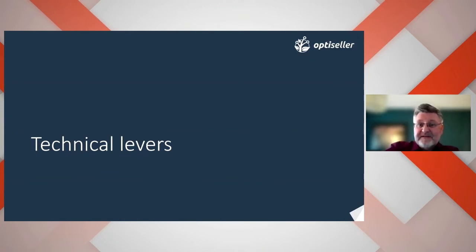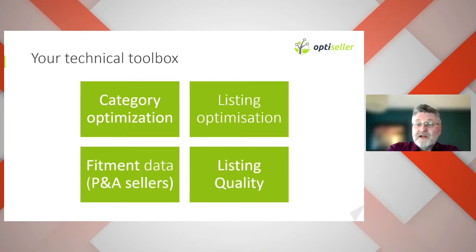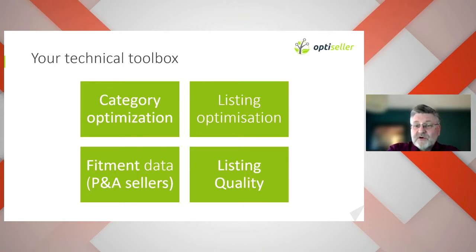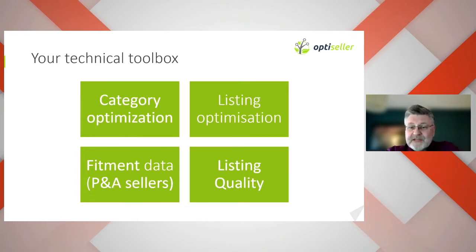Moving on to discuss some of the technical leaders in your toolbox — this is the part of the session you've all been waiting for. Here are the four technical headline things that you could and should be doing from today to improve your eBay performance. These are not ranked in any order as they are all weighted to improve the conversion sales rate. They are: category optimization, listing optimization, fitment data, and listing quality. If you only had an hour a day to improve your eBay listings and sales performance, what would you focus on? The purpose of this session is to direct you to focus on at least one of these.